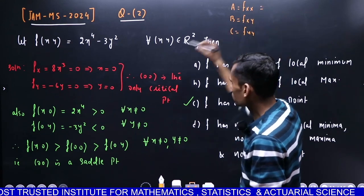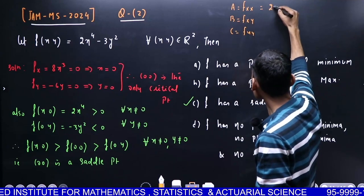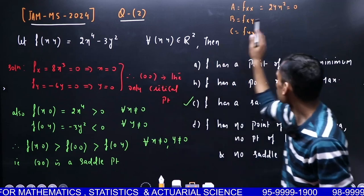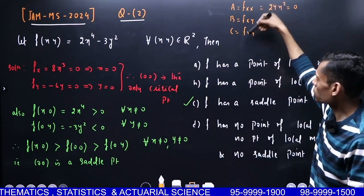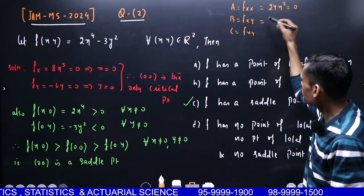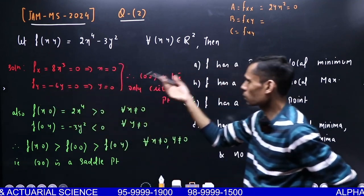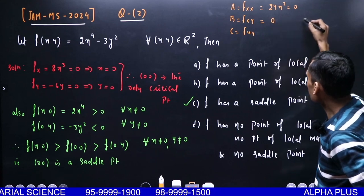When you differentiate f_x with respect to x, you get 24x². But at (0,0) it is 0, so A is 0. Since A is 0, AC is also 0. Now let's check B. When you differentiate f_x with respect to y or f_y with respect to x, it's 0. So this is a complete failure.